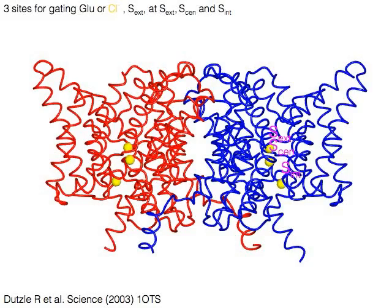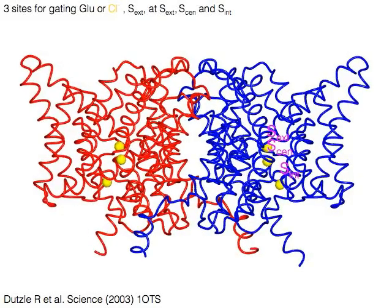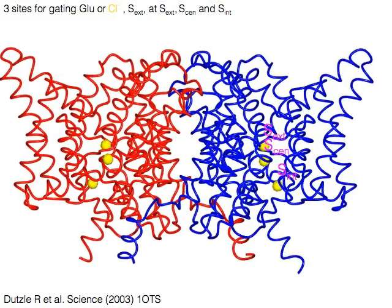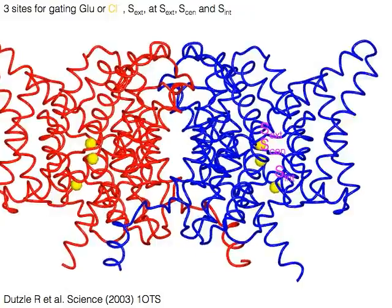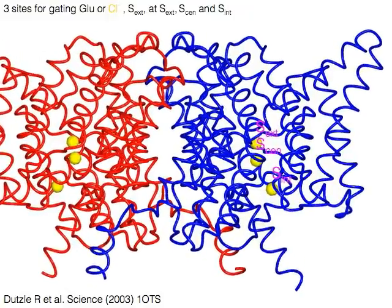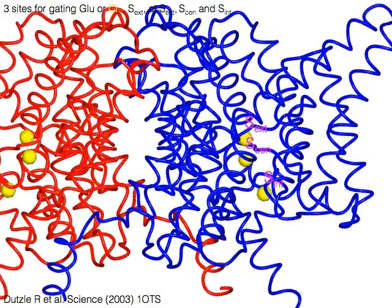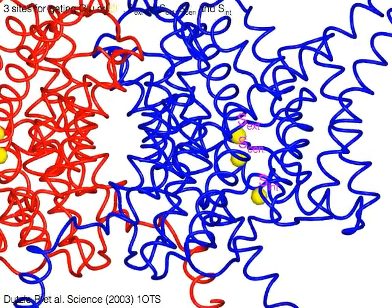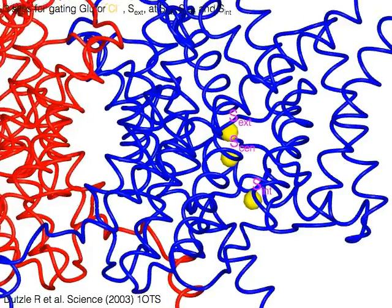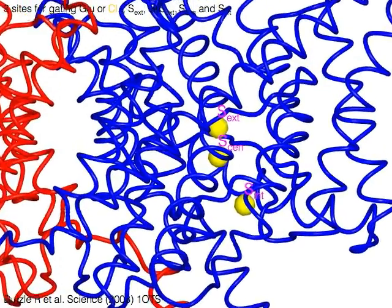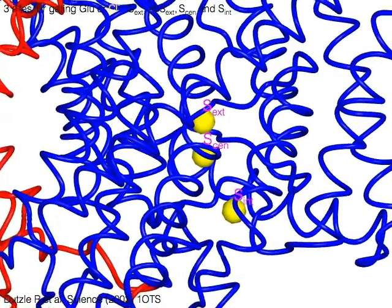There are three positions for the gating glutamate residue and chloride ion to be transported. They are Sext for the external site, Sn for the central site, and Sint for the internal site.